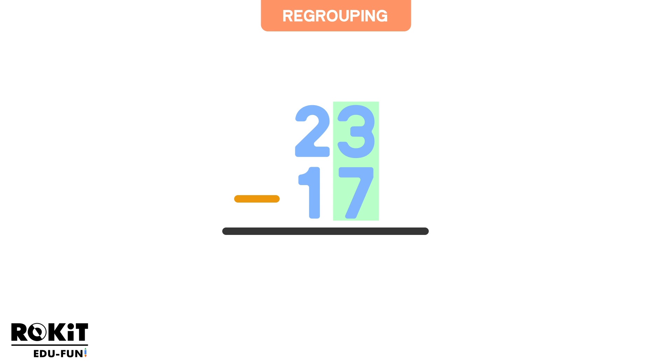So what is 2 minus 1? Correct, 1. So the 2 in the tens column becomes a 1, and the 1 gets added to the ones column. So the number becomes 13 instead of 3.